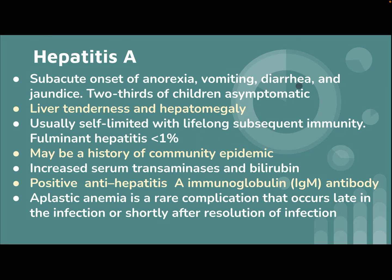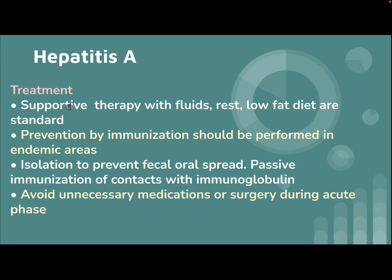Hepatitis A virus: presents with subacute onset of anorexia, vomiting, diarrhea, and jaundice. Two-thirds of children are asymptomatic. Liver tenderness and hepatomegaly are common. It is usually self-limited with lifelong subsequent immunity. Fulminant hepatitis occurs in less than 1%. There may be a history of community epidemic. Increased serum transaminase, elevated bilirubin, and positive anti-hepatitis A IgM antibody are found. Aplastic anemia is a rare complication occurring late in infection or shortly after resolution.